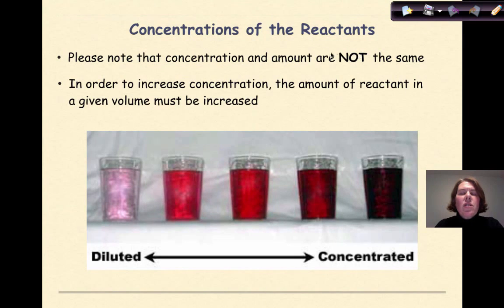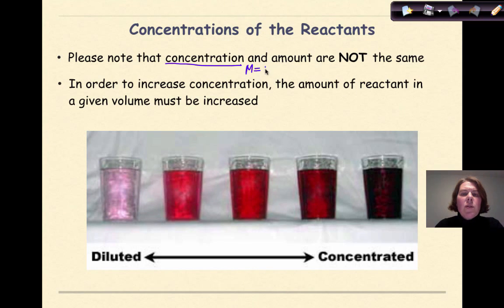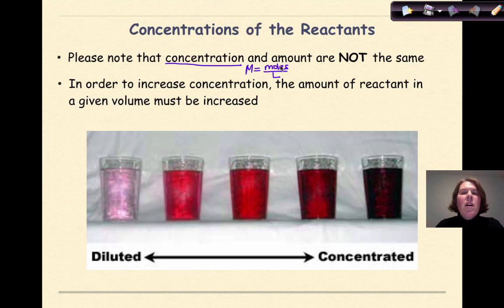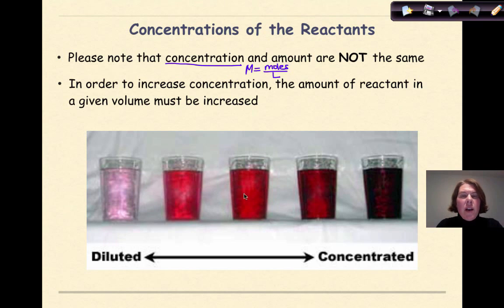Now let's talk about the concentrations of the reactants. Remember, concentration and amount are not the same thing. Concentration specifically refers to molarity, and the formula for molarity is: molarity equals moles over liters. Amount can be pretty much anything — grams, moles, something more specific — while concentration is always a relationship between moles and volume. In order to increase concentration, the amount of reactant in a given volume must be increased.